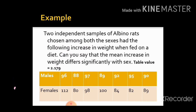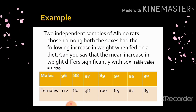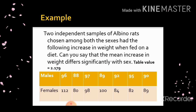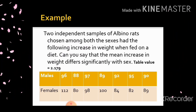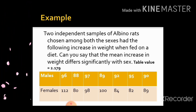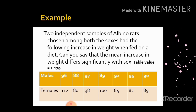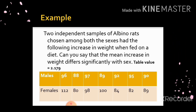Seven values are given here. For males: 98, 96, 88, 97, 89, 92, 95, and 90. And for females: 112, 80, 98, 100, 84, 82, and 89.